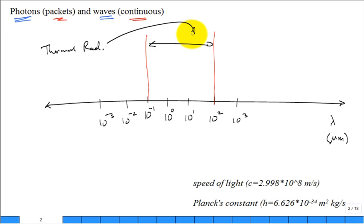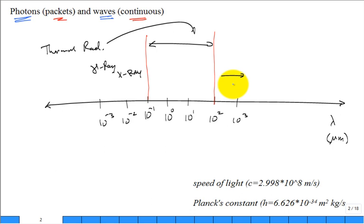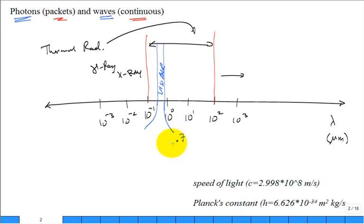Other electromagnetic radiation types include x-rays and gamma rays, which have much shorter wavelengths, and radio waves with much longer wavelengths. Within the thermal radiation active region, there's a region of the visible spectrum — what the eye can see — roughly between 0.4 and 0.65–0.7 microns.